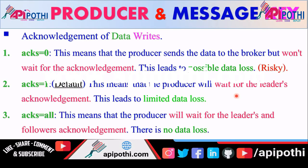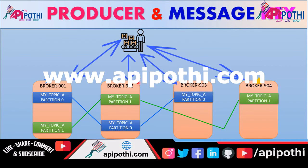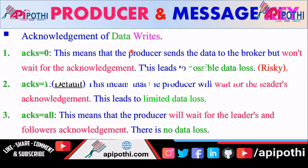The third important thing is: how does the producer ensure that the data it sent was actually received by the respective broker? The producer expects some acknowledgement from each broker. There are three types of acknowledgement: acknowledgement 0, acknowledgement 1, and acknowledgement all. Among these, acknowledgement 1 is the default — it is auto-configured. If you want manual configuration, you can use acknowledgement 0 or acknowledgement all.